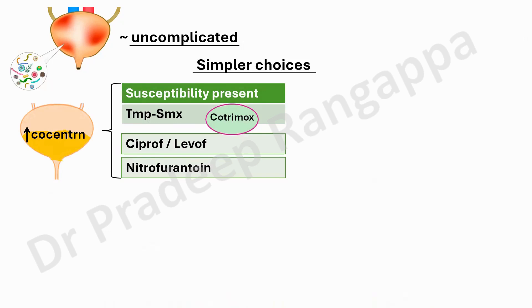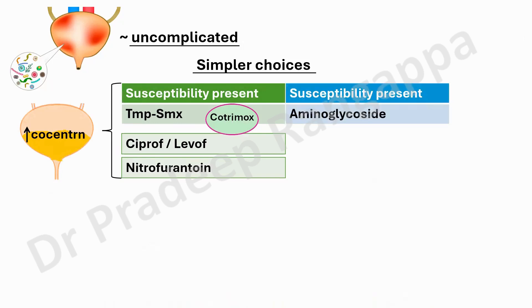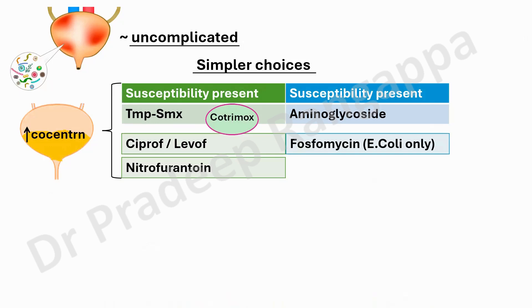Another simpler choice is aminoglycosides. In the ICU, aminoglycosides play a very important role because we often see resistance to most antibiotics, and there may be aminoglycoside sparing. In the ICU we are limited in usage because most of these patients with UTI tend to have acute kidney injury. If using aminoglycosides as once-daily dosing, it is important to have therapeutic drug monitoring so that we dose appropriately in patients with AKI.